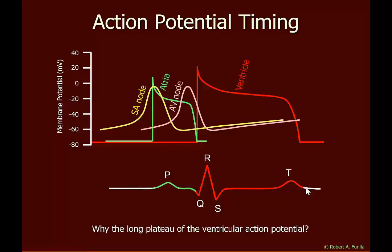Why is there such a long plateau phase in the ventricular action potential? That is to inhibit tetanus. We do not want another action potential to occur before the ventricles have completed contracting, so we hold the membrane potential above threshold, keeping it in its absolute refractory period until the ventricles have finished contracting. Now we can relax and trigger another action potential.